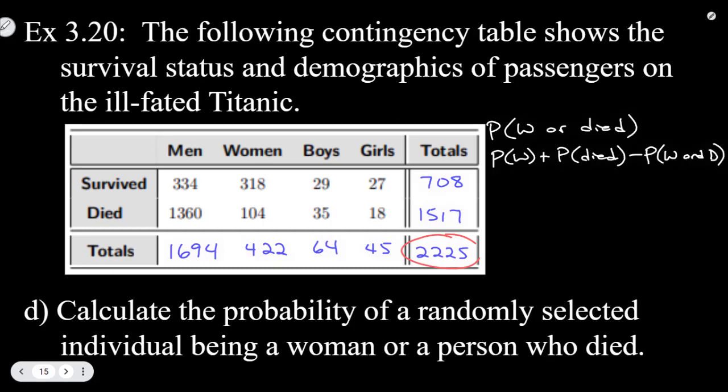So the probability that somebody was a woman on this trip was 422 out of 2225 plus the probability that a person died would be this one, 1517 over 2225, and then minus the ones that were counted twice, so minus 104 over 2225.